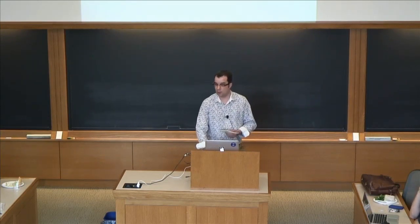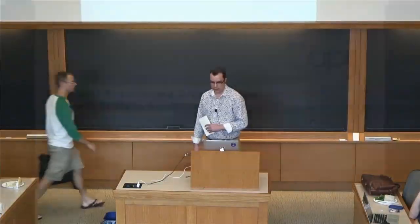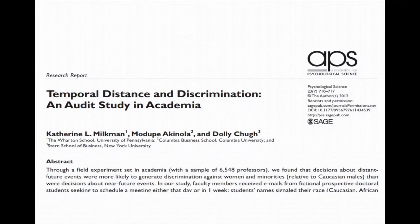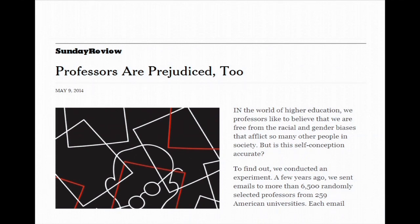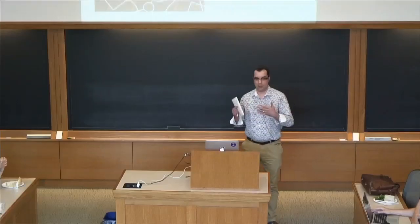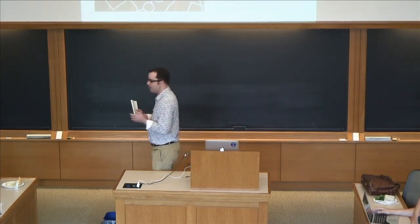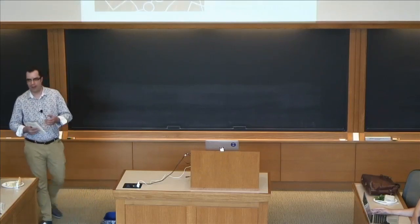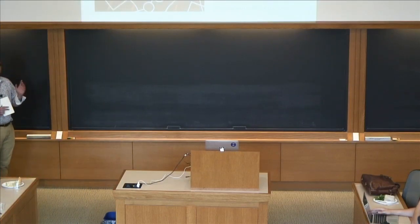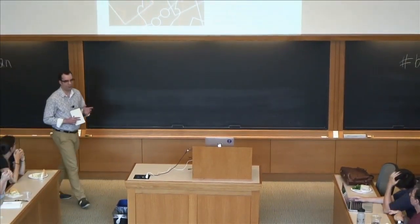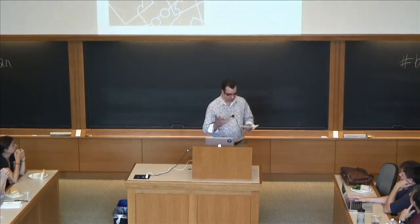A famous audit study recently in the news is one published in APS where psychologists at a business school audited professors. They sent professors requests for meetings that were identical, then varied the names of the person requesting according to the U.S. Census list of names associated with different genders and racial and ethnic groups. They found that if you were a woman or a member of a racial minority, you were less likely to get a response when you asked for an appointment. That's a standard example of the social science audit methodology.